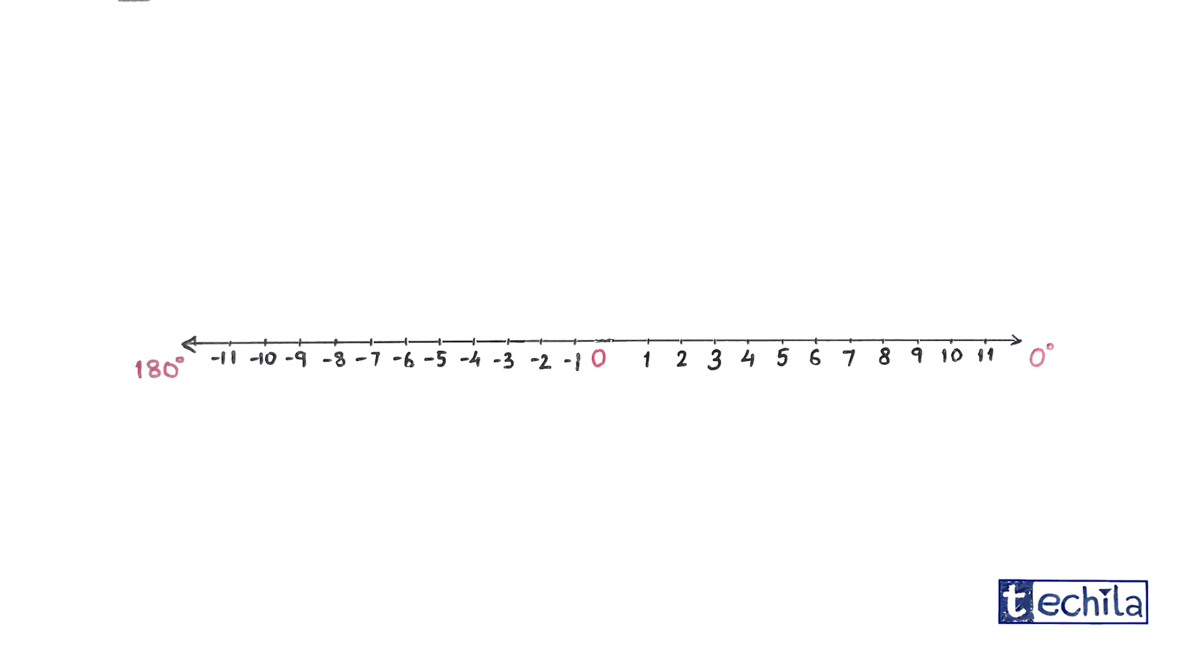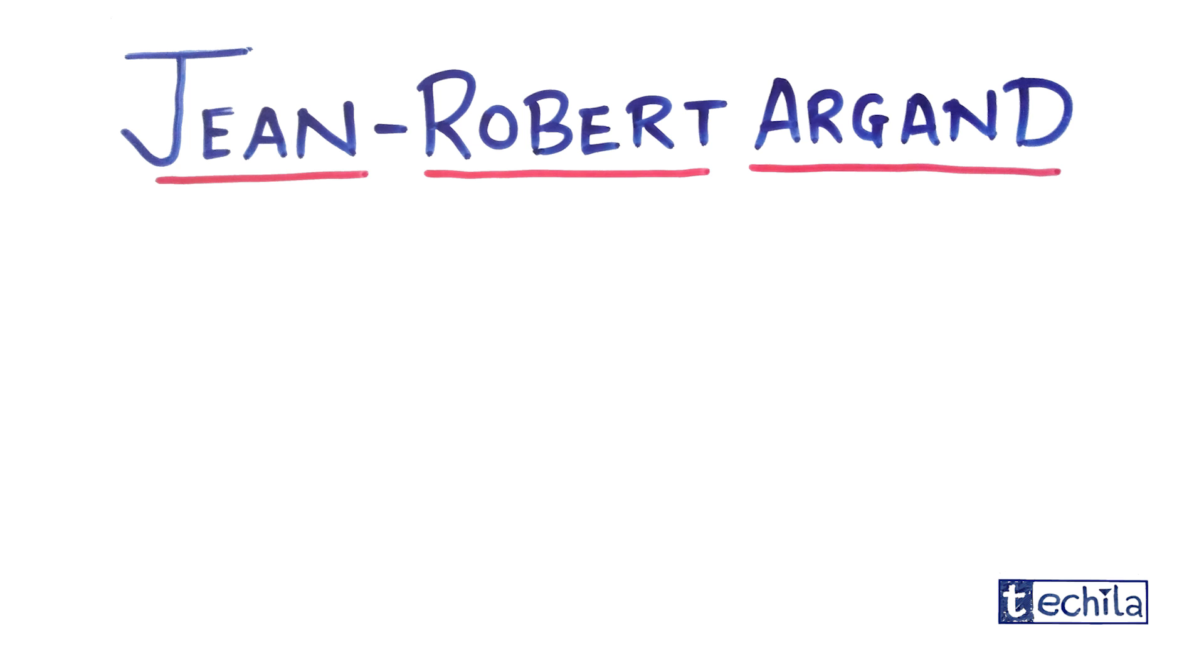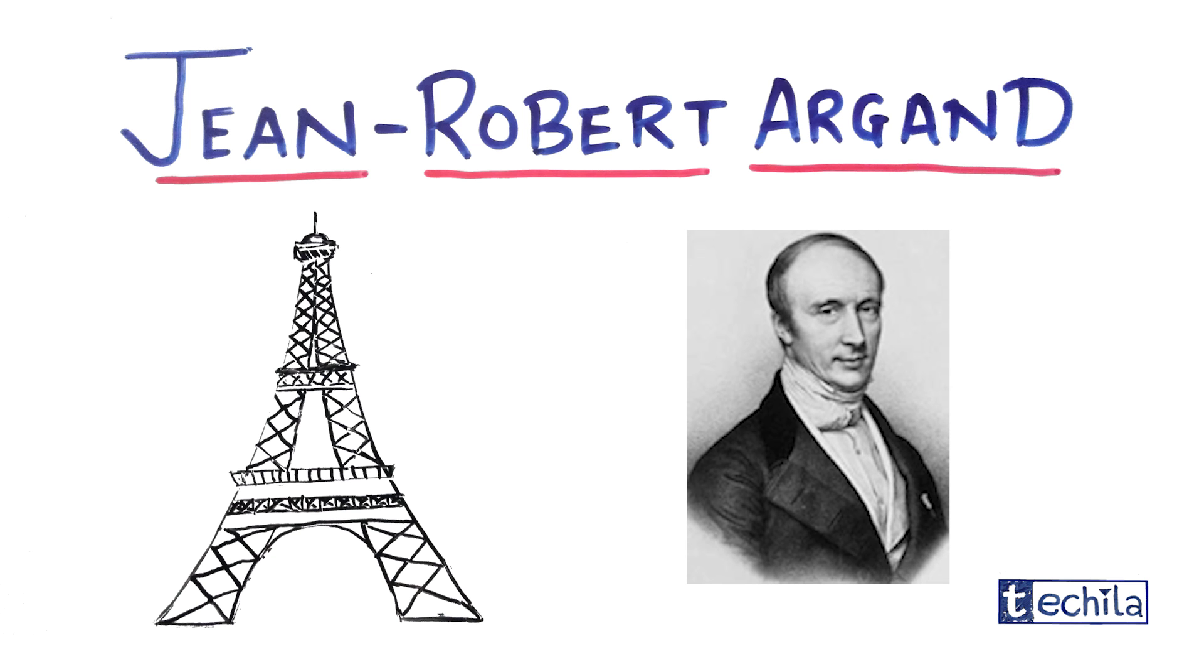Hence, to solve the problems like the above equation, a new set of numbers of phase shift of 90 degrees or minus 90 degrees were needed to be introduced in the number system. In 1806, in Paris, John Robert Argon first published the idea of this addition in the number line system.